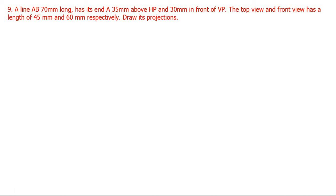In today's class we are going to see a typical example on projection of straight lines. The example: a line AB 70 mm long has its end A 35 mm above HP and 30 mm in front of VP. The top view and front view have lengths of 45 mm and 60 mm respectively. Draw the projections.